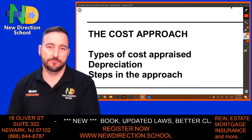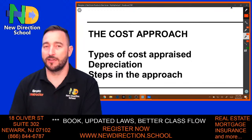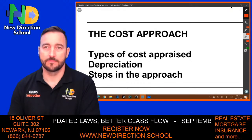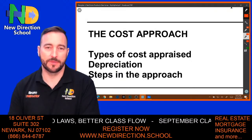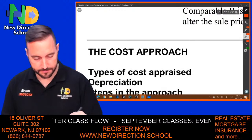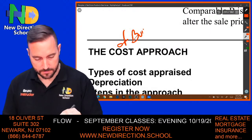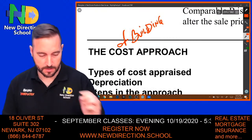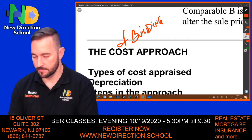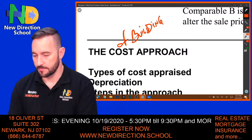The cost approach, as the name kind of indicates, is the cost of the building — how much does it cost to build. The cost approach is about the cost of building.